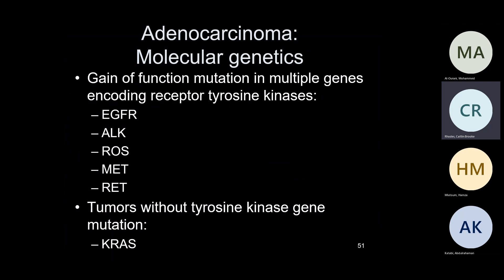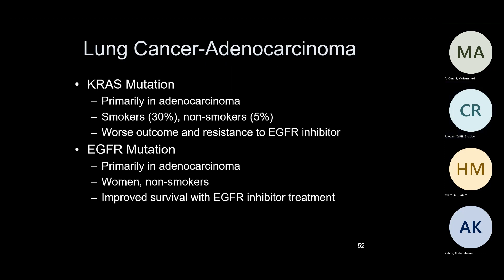When you have adenocarcinomas, PD-L1 is important. Also EGFR, ALK, ROS1, MET, and the tyrosine kinase inhibitors. There are mutations and you can have KRAS mutations. KRAS is seen in smokers whereas EGFR is in non-smokers. KRAS mutations in adenocarcinoma: smokers about 30%, non-smokers 5%. EGFR mutations are usually in non-smokers.